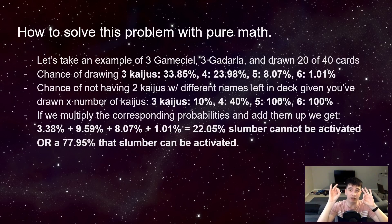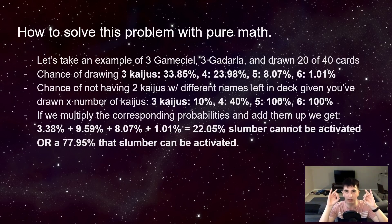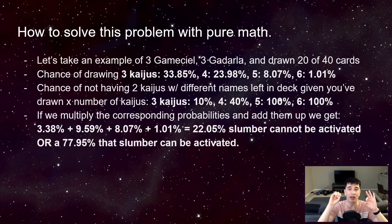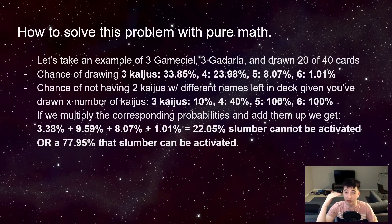The key is it doesn't matter which Kaiju you draw first. If you draw Gamma Seal first, you only care about the next two draws after that. Because if you draw Gamma Seal and Kadarla first, it doesn't matter — it's the other two that have to match up. So assuming we've drawn a Gamma Seal first, we need the next two Kaijus drawn to both be Gamma Seal: that's two-fifths times one-fourth, which gives two-twentieths, or one-tenth — 10%.